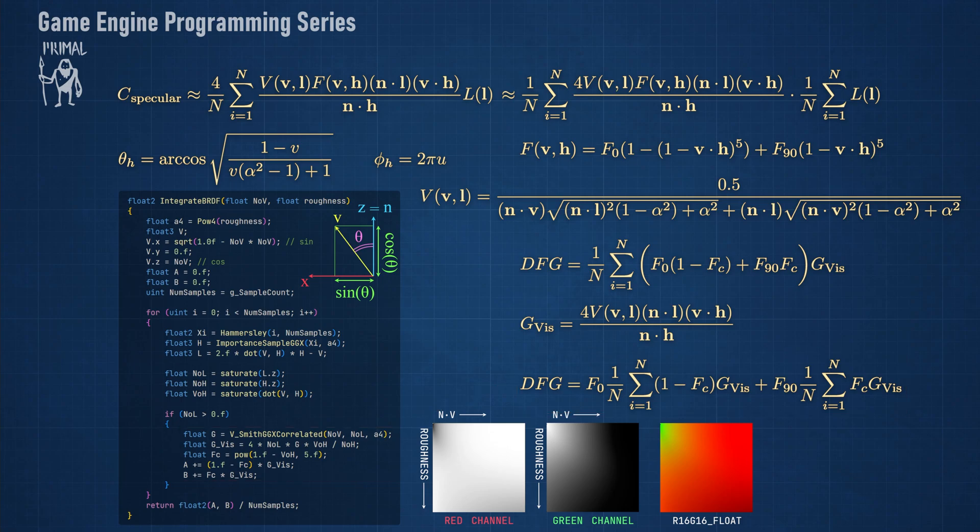After the for loop, we divide the results by the number of samples and return the values. As we'll see later, the value of a will be written to the red channel and b to the green channel of the lookup texture.